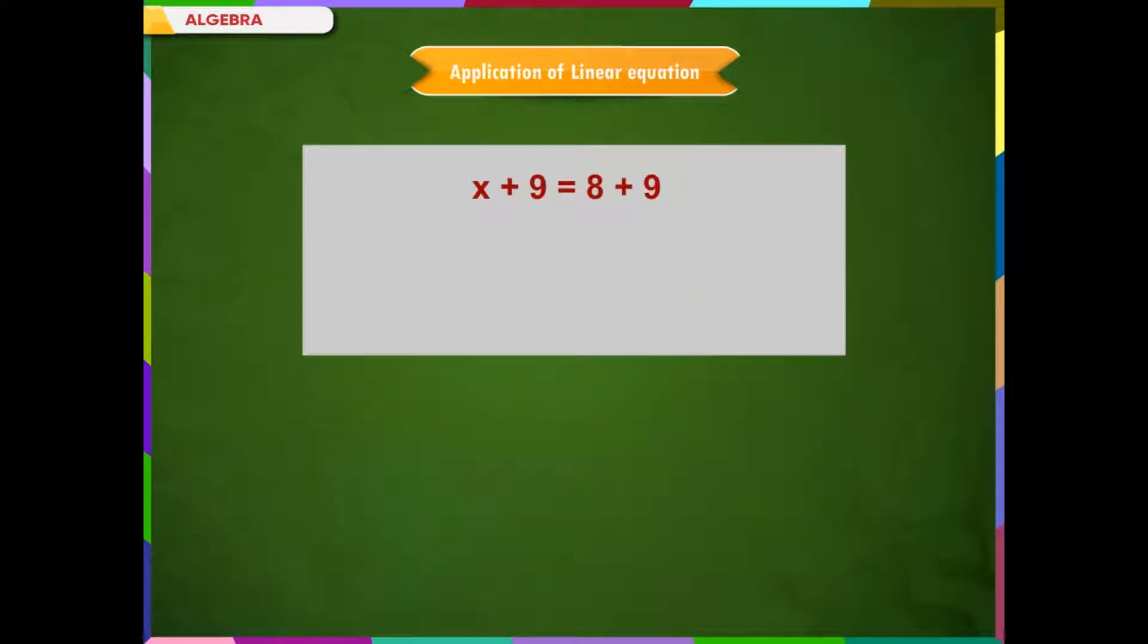Therefore, x plus 9 is equal to 8 plus 9, which equals 17. Therefore, the two numbers are 8 and 17.